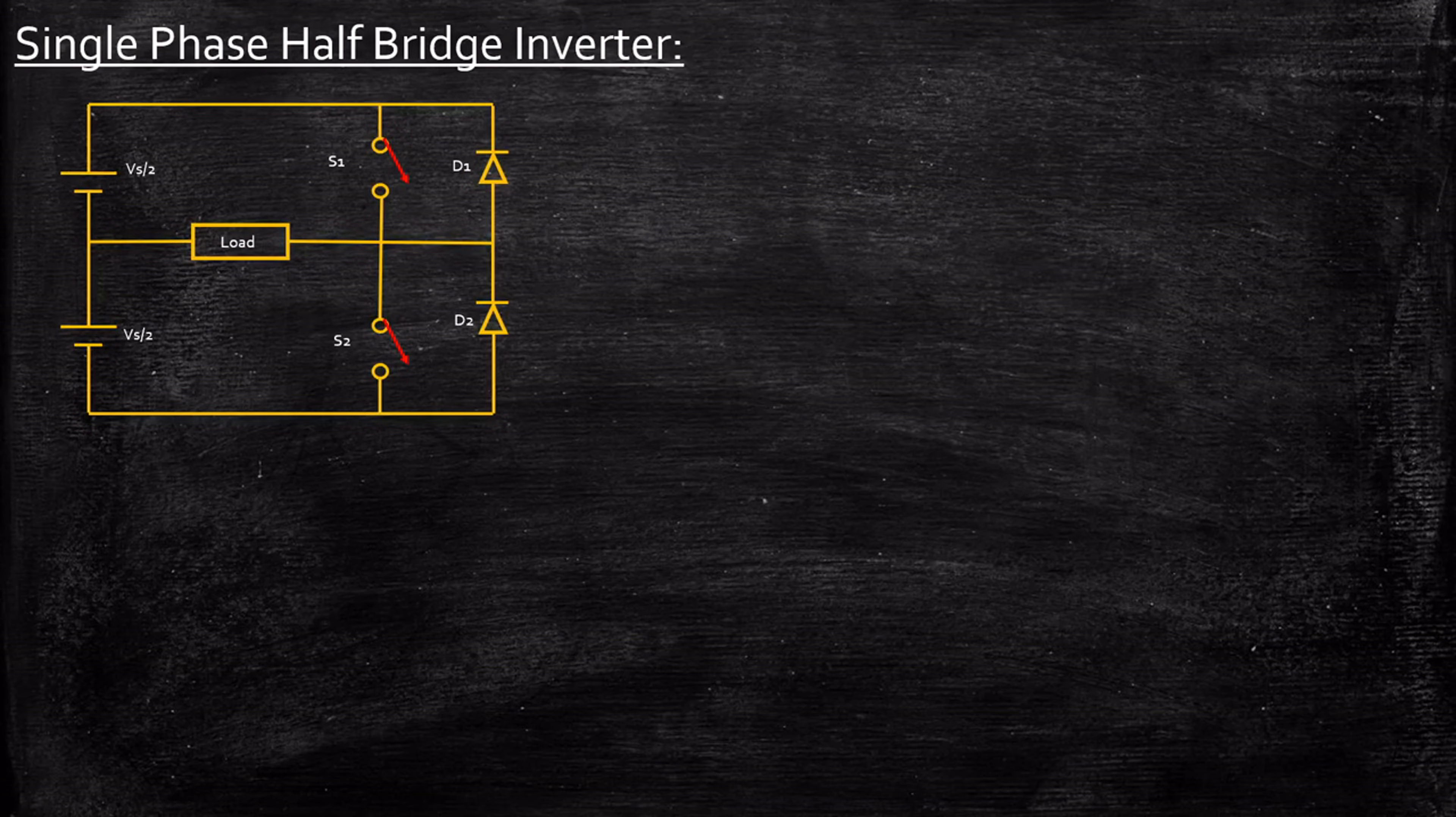Fundamentally, inverters are circuits used to convert DC to AC. So what is a half bridge inverter circuit? To understand this, we need to look at the operation.